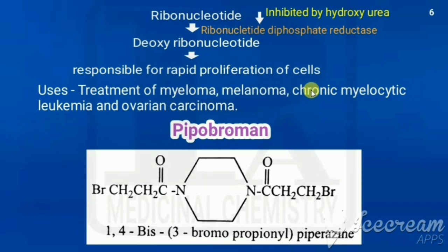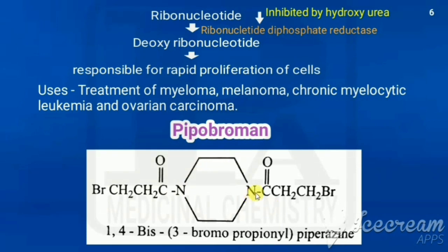By inhibiting ribonucleotide diphosphate reductase, ribonucleotides are not converted to deoxyribonucleotides, so rapid cell proliferation is inhibited. Hydroxyurea is used in treatment of myeloma, melanoma, chronic myelocytic leukemia, and ovarian carcinoma. Next is pipobromin. Its parent ring is piperazine, with both ends bearing a -CO-CH2-CH2-Br (bromoethyl) group — specifically, 1,4-bis(3-bromopropionyl)piperazine.